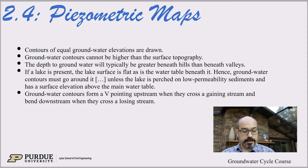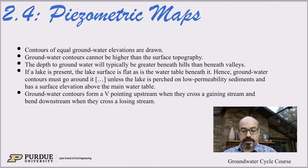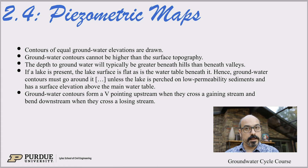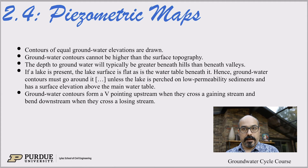If a lake is present, the lake surface is flat, as is the water table beneath it. So the groundwater contours must go around the lake, unless the lake is perched on a low-permeability sediment and has a surface elevation above the main water table. If the lake is not connected, there might be some aquifer below it. Typically, if you see a lake, this is a surface expression of an aquifer.